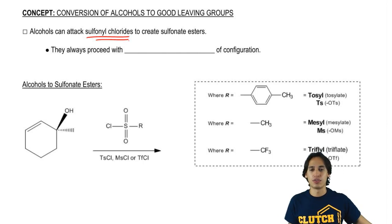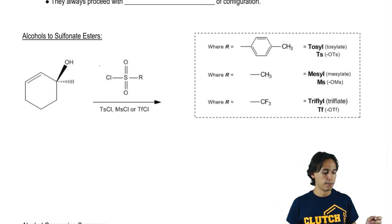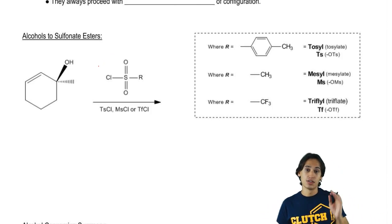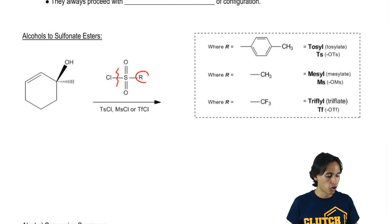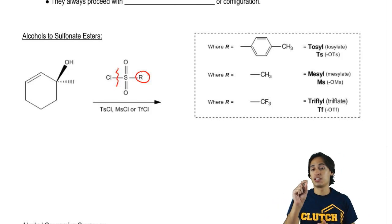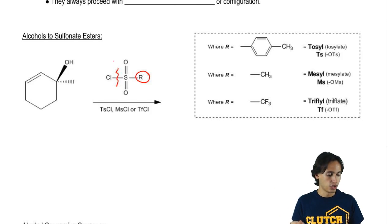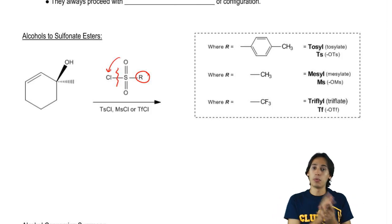First of all, what is a sulfonate ester? If you guys remember, the general structure was just that you had basically an S with two double bond O's, so I'm just going to draw a line here and then you had an R group. So a sulfonate ester would have basically an O on this side, an O where the Cl is, then an S, the two double bond O's and then your R group.